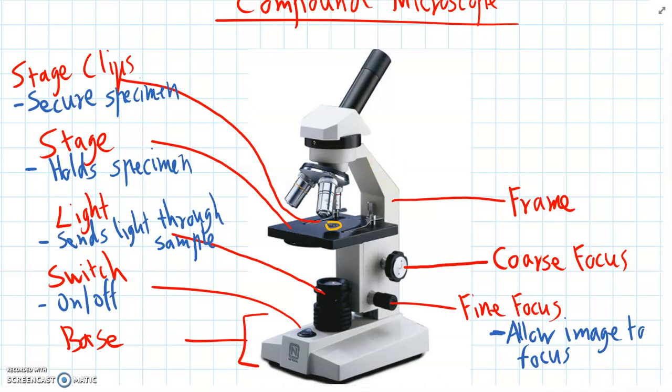So then moving up even further we have the top section of the microscope which is called the head. And the head contains a few other important parts. And in particular it has the actual magnifying section.